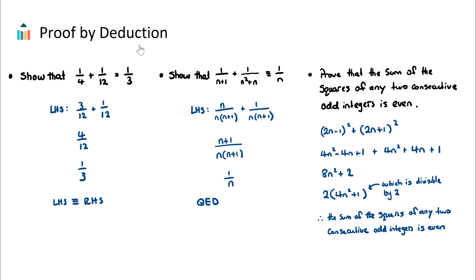So what is a mathematical proof? A proof is just a series of logical steps that show that one side of a mathematical statement is equal to, or as we can see in this second example, equivalent to the right-hand side. If it was equal to, we might just see numbers where the left-hand side equals the right-hand side, but if we have variables, we may see the identity symbol, which says the left-hand side is equivalent to the right-hand side.